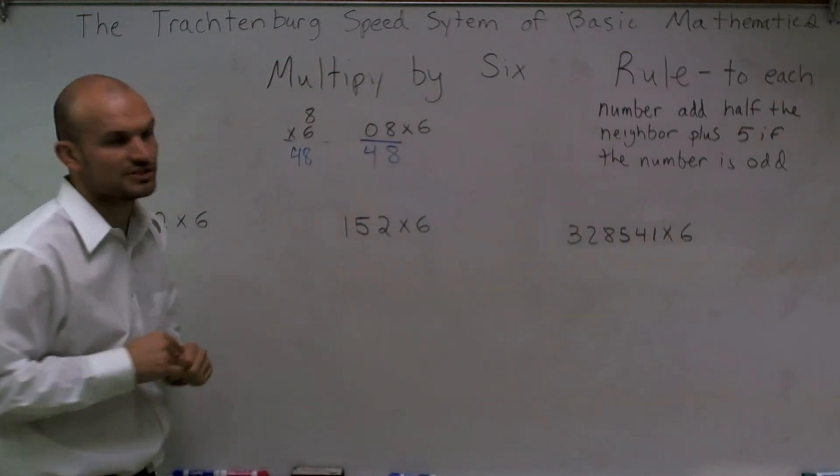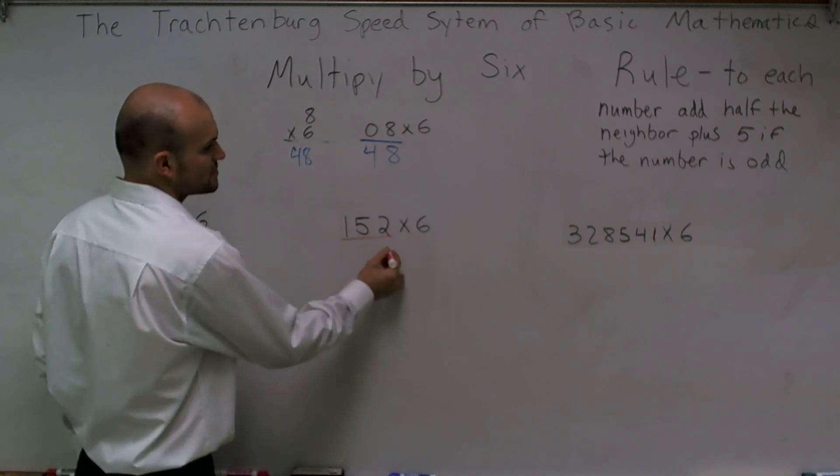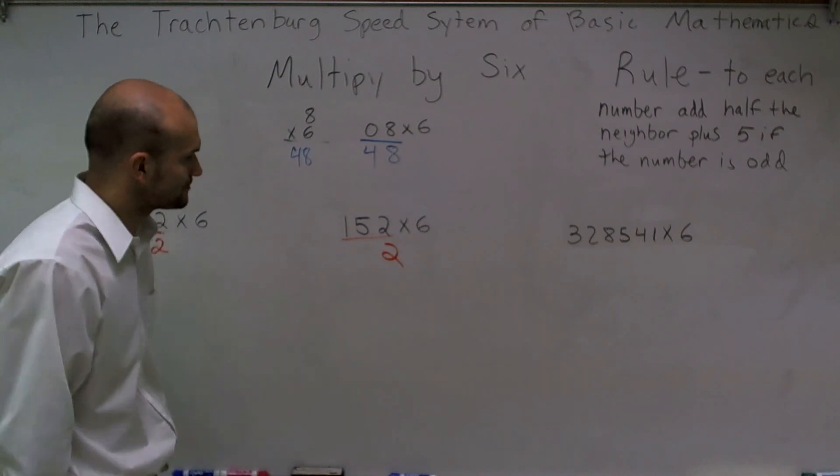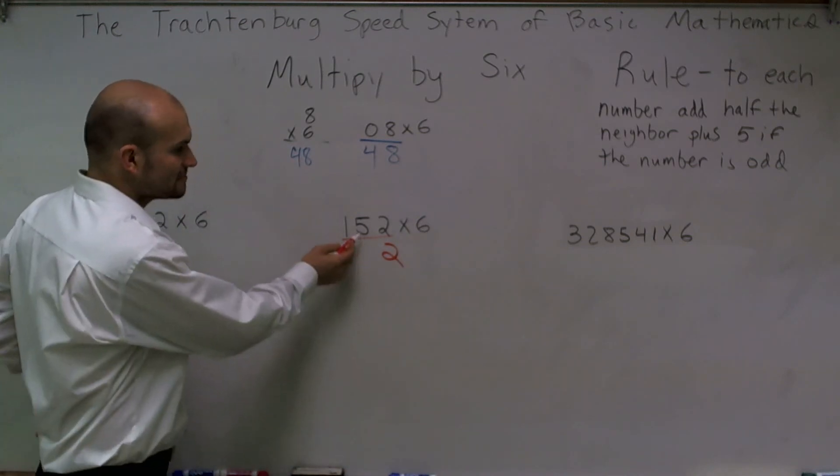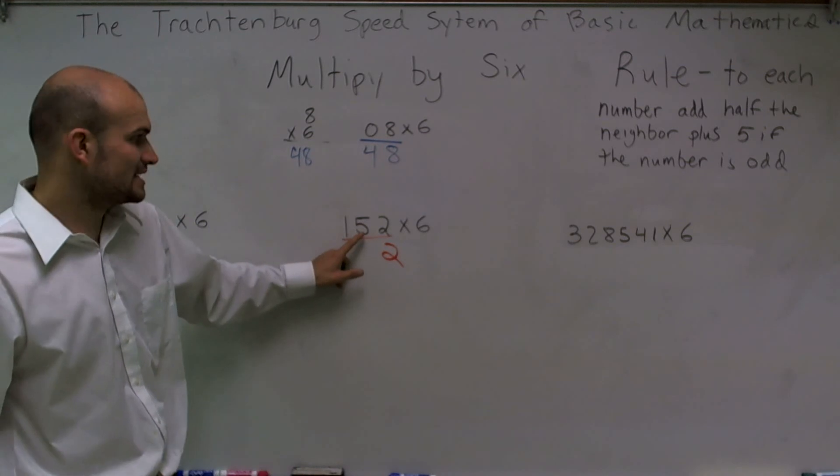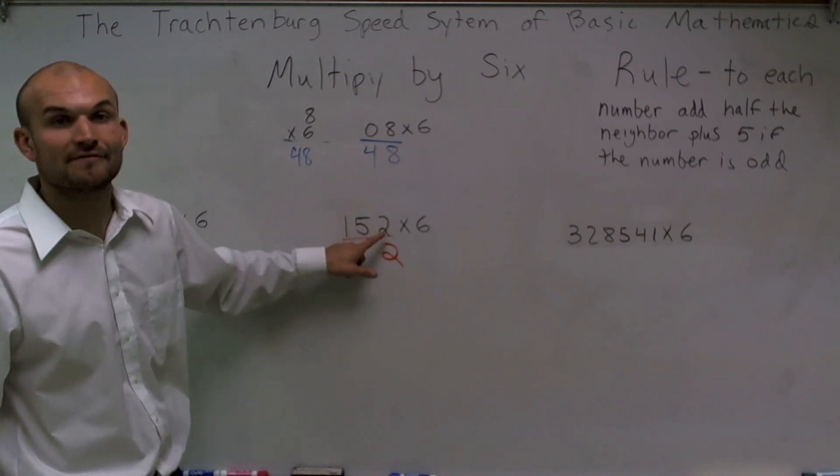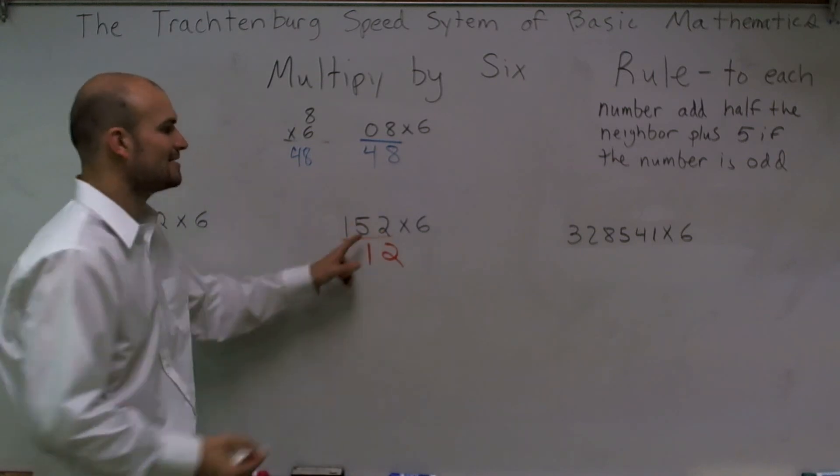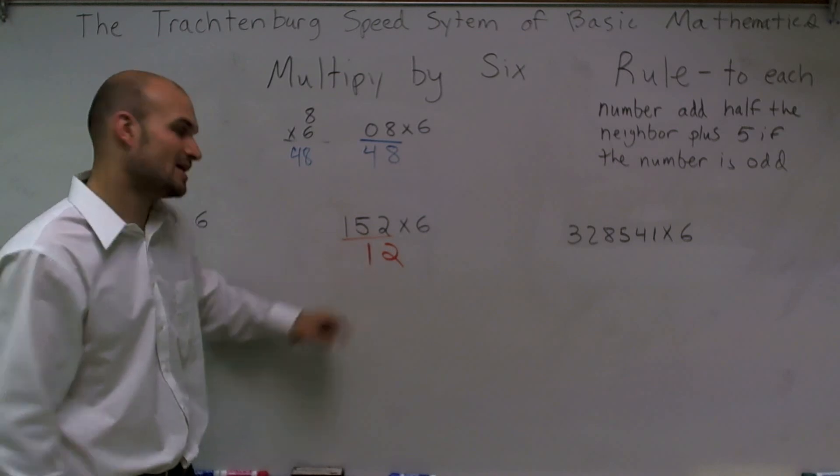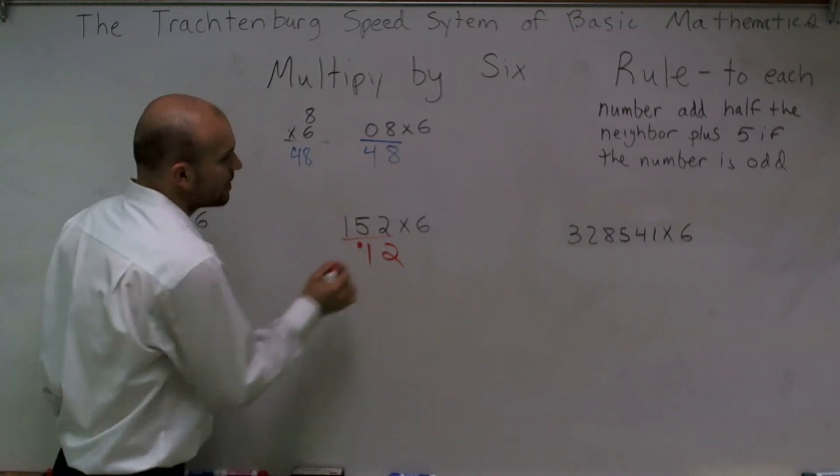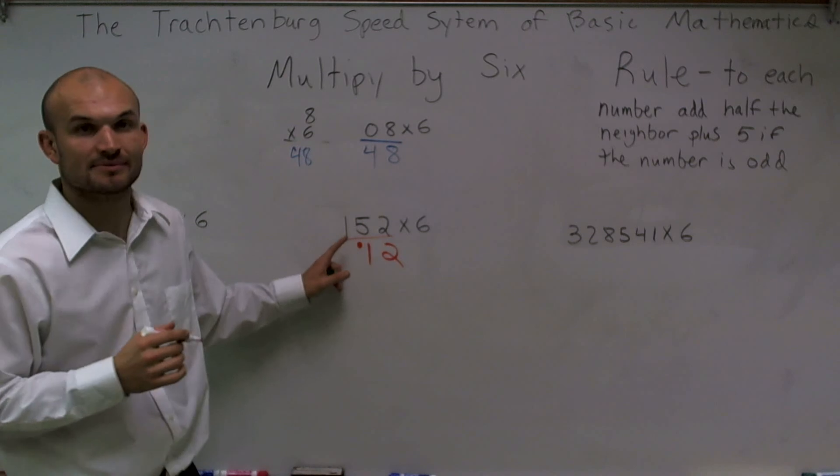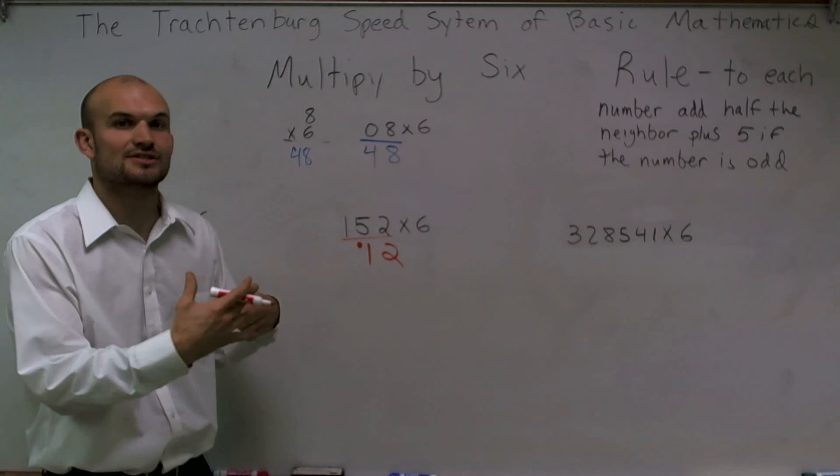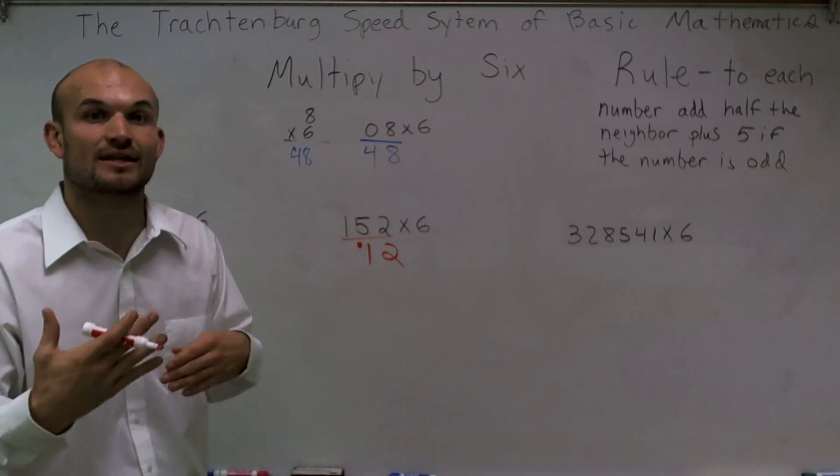So if I say 152 times six: first number, when multiplied by six, we can drop down because we can't add half of the neighbor because there is no neighbor. Five, it is odd, so I need to add five, which is going to give me ten, plus half of the neighbor, which is two. Add half of two, which is one. One plus ten is eleven. Now, when I need to carry a one, we make a dot. And that's just going to tell us I'm going to carry this dot over. I'm going to speak this very slowly, but once we get on to the other videos, I'll show you how exactly I want you to say this out loud.